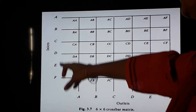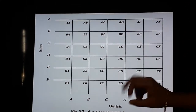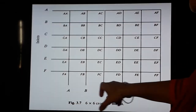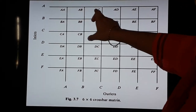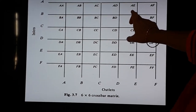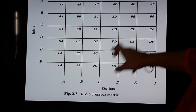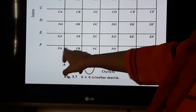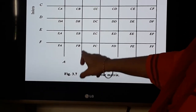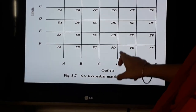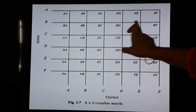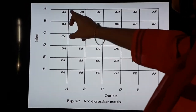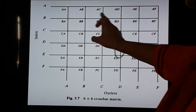Now let us suppose these subscribers want to communicate with these subscribers. So how will the total matrix look like? It will be like A-A, B-A, C-A, D-A, E-A, F continuing to F-A, and from this side A-F, B-F, C-F, D-F, E-F. So this will be the total matrix, that is this into this, similarly this into this. Ultimately we will get the complete matrix.